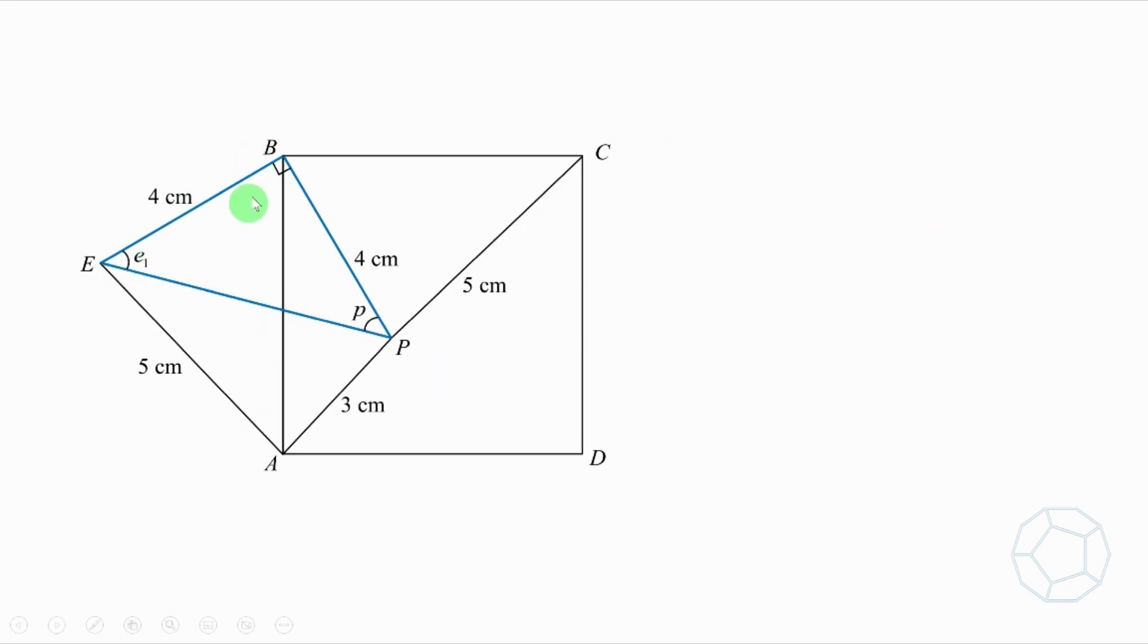Next, we'll focus on the blue triangle EBP, which is isosceles and right-angled. Label the two angles as E1 and P as shown. Because BE is equal to BP, which is 4cm. Therefore, E1 is equal to P. And the reason is base angles of isosceles triangle. Then E1 plus P plus 90 degrees is equal to 180 degrees because of angle sum of triangle. So 2E1 is equal to 90 degrees. E1 is equal to 45 degrees.